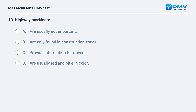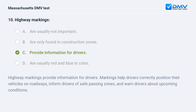Highway markings: a. are usually not important. b. are only found in construction zones. c. provide information for drivers. d. are usually red and blue in color. Answer: c. provide information for drivers. Highway markings help drivers correctly position their vehicles on roadways, inform drivers of safe passing zones, and warn drivers about upcoming conditions.